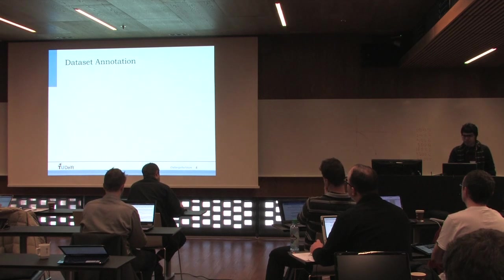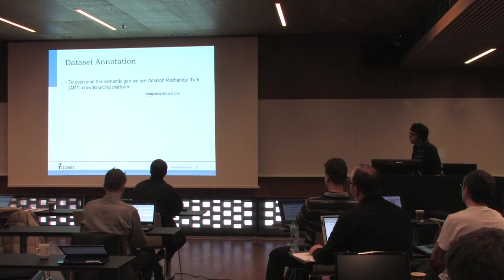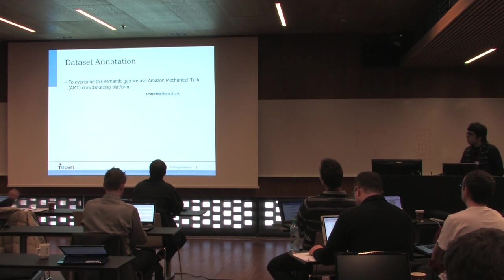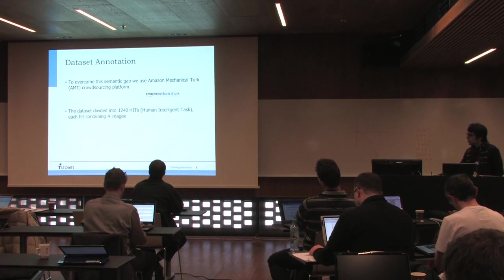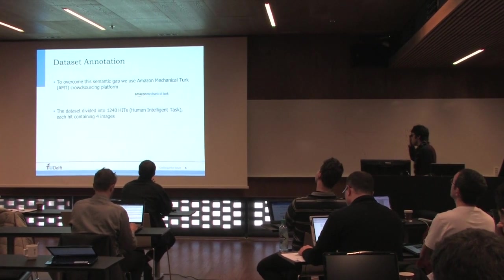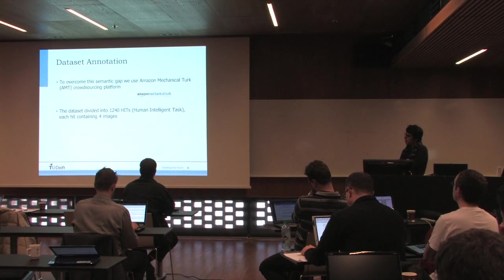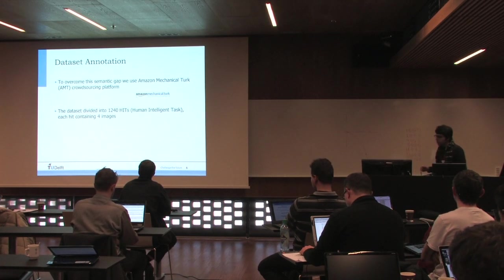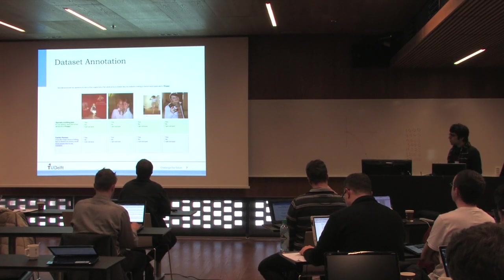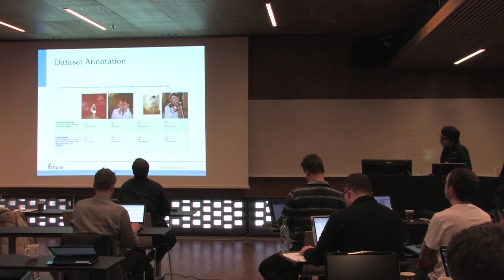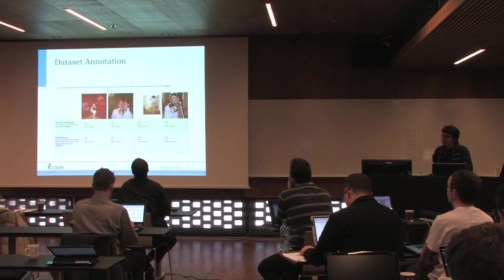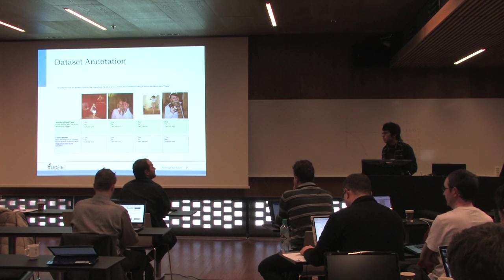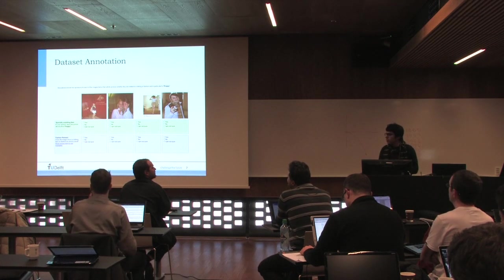That's why we did a crowdsourcing experiment using Amazon Mechanical Turk. We asked the crowd to validate the given tags. We created around 1,200 hits or human intelligent tasks where workers can, in each hit, work on four images and validate the content. I have parts of the screenshot of the hits that we designed. We had four images in each hit to minimize the number of hits and make it easier for workers.